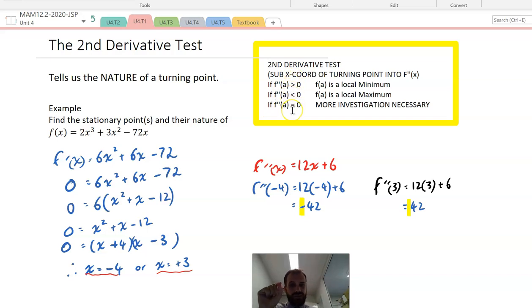Well, if it's equal to zero, and it is possible, you're going to have to do some more investigation. You're going to have to do some other stuff to figure out whether it's a minimum, a maximum, or something else.